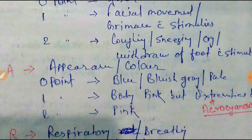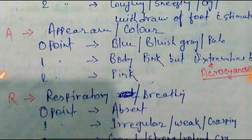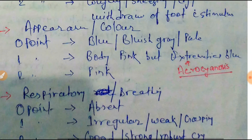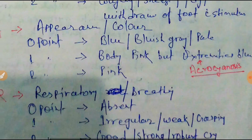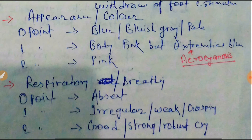The next A indicates Appearance or color. 0 points indicates blue or gray or pale color all over, 1 point indicates body pink but extremities blue — this is called acrocyanosis — and 2 points indicates the whole body is pink.